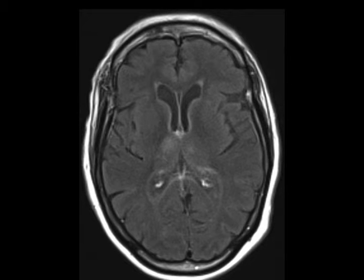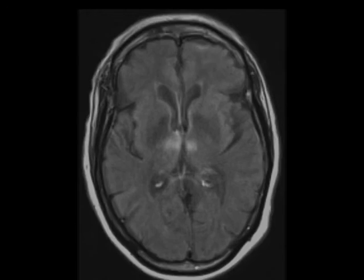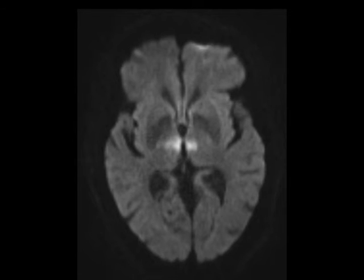The axial T2-weighted and 3D time-of-flight MRA images were degraded by patient motion, but a thrombus was identified in the basilar tip on a subsequent CTA of the head and neck. This case demonstrates top-of-the-basilar syndrome, which occurs when there is a thromboembolic occlusion of the distal basilar artery.